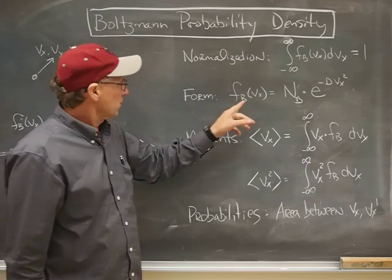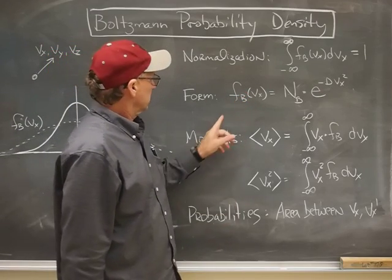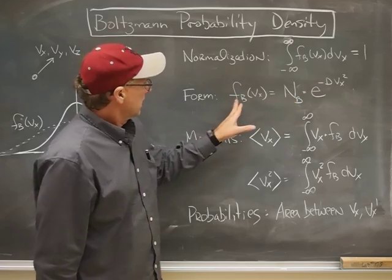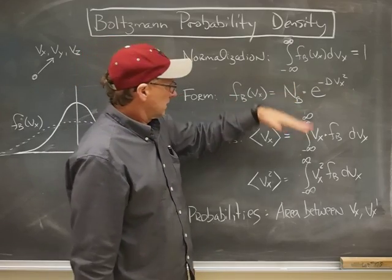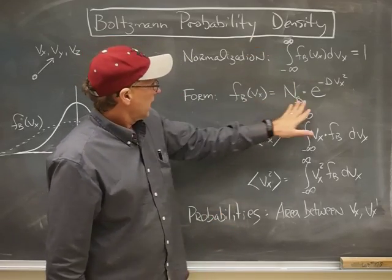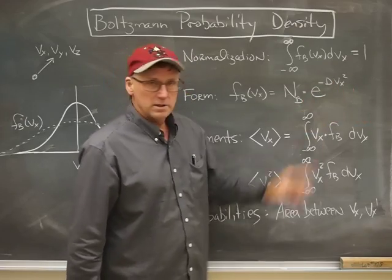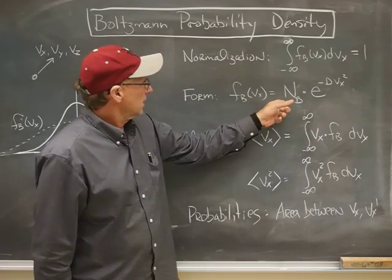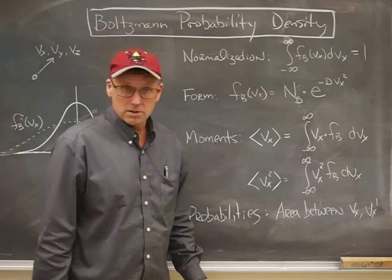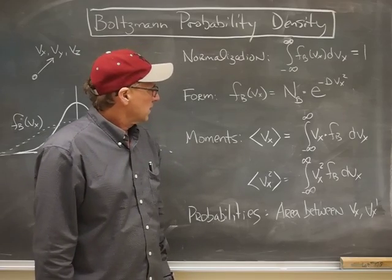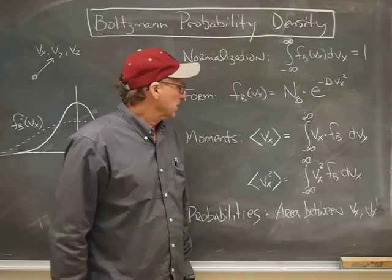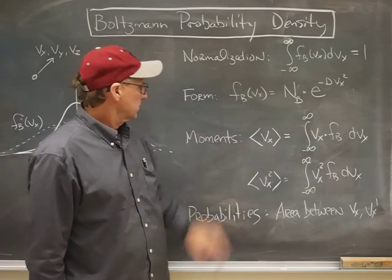There is a particular form to the Boltzmann probability density, and it's given by this. There's a normalization constant that determines how high it is, and the shape of it is given by this Gaussian function. So n and d are constants that pertain to a particular gas at a particular temperature. So it's a Gaussian.